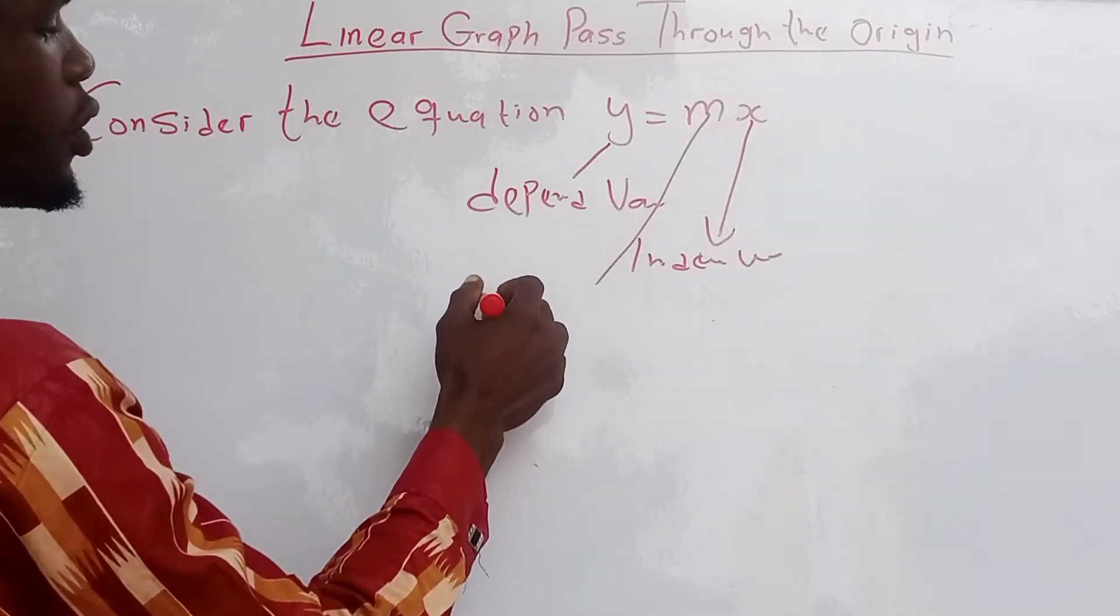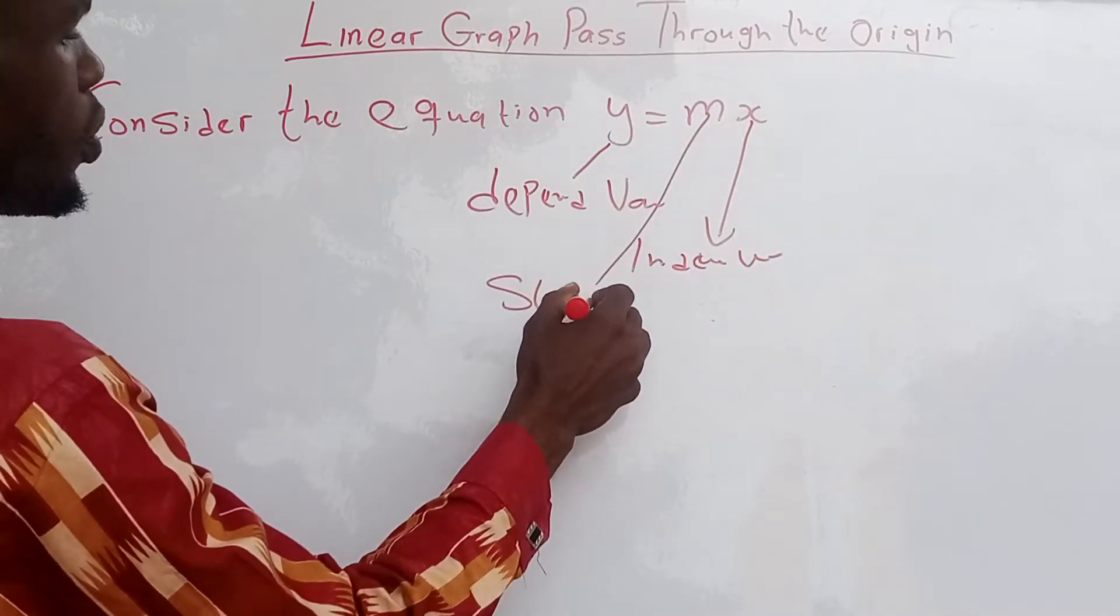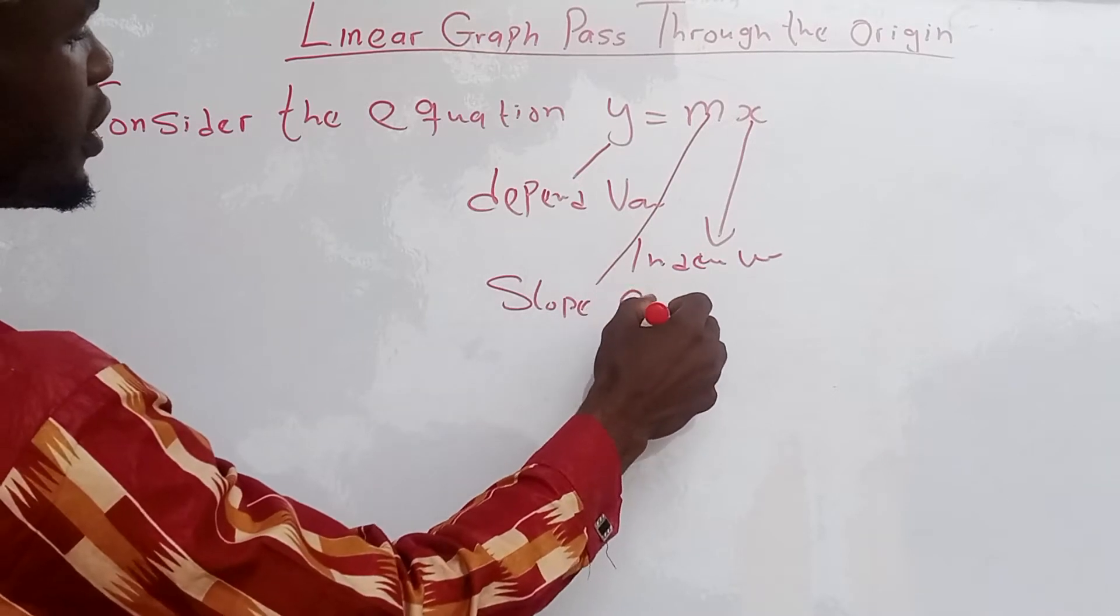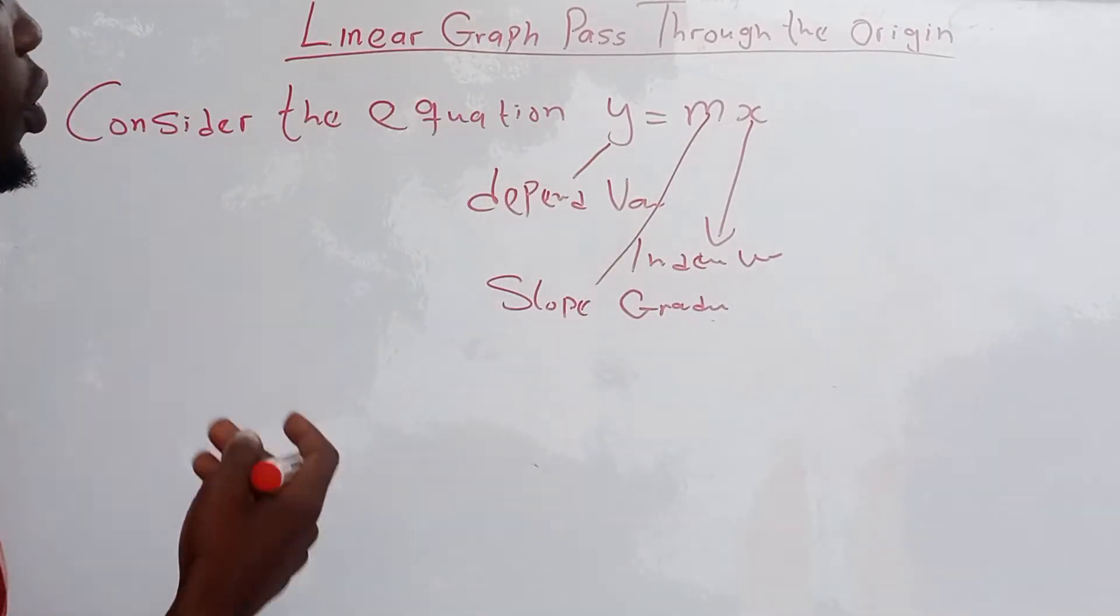M is the slope, which we can also call the gradient.